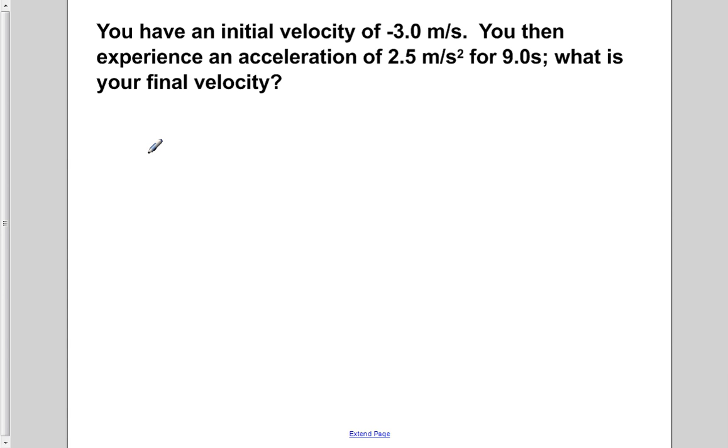The first step for solving a problem like this is to write down the given information. So we're going to go off to the side here and write down a column for our given information. We're now going to go back to our problem, reread this through, and pick out all the relevant information that it has. You have an initial velocity of negative three meters per second. This tells us that v naught is equal to negative three meters per second.